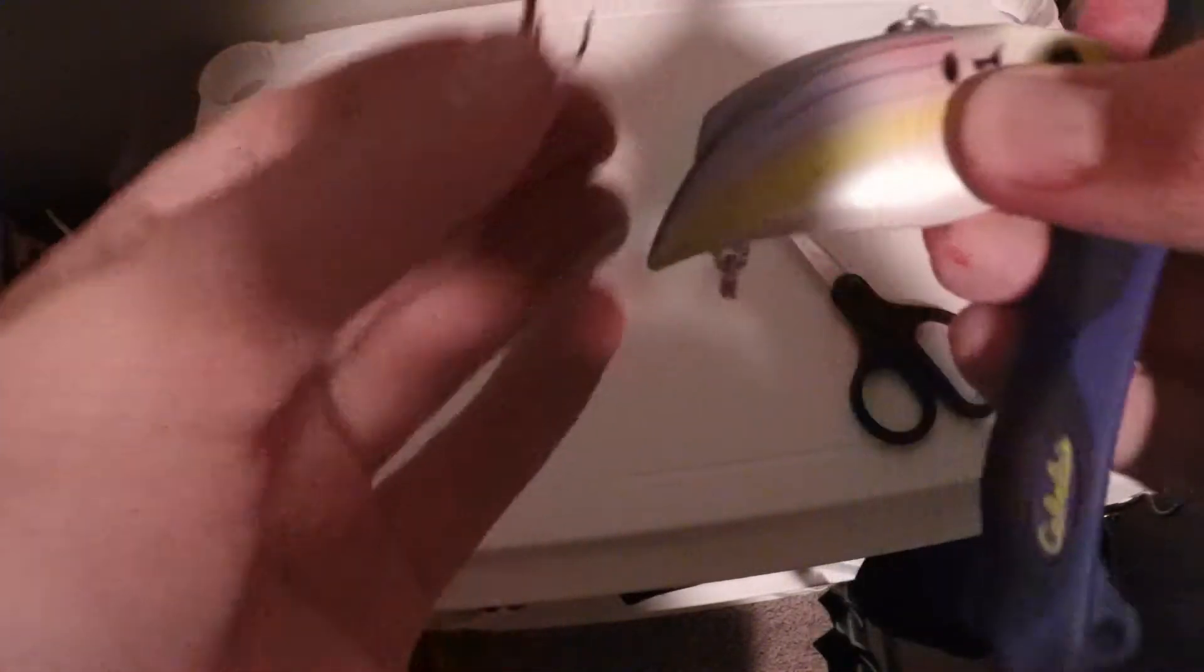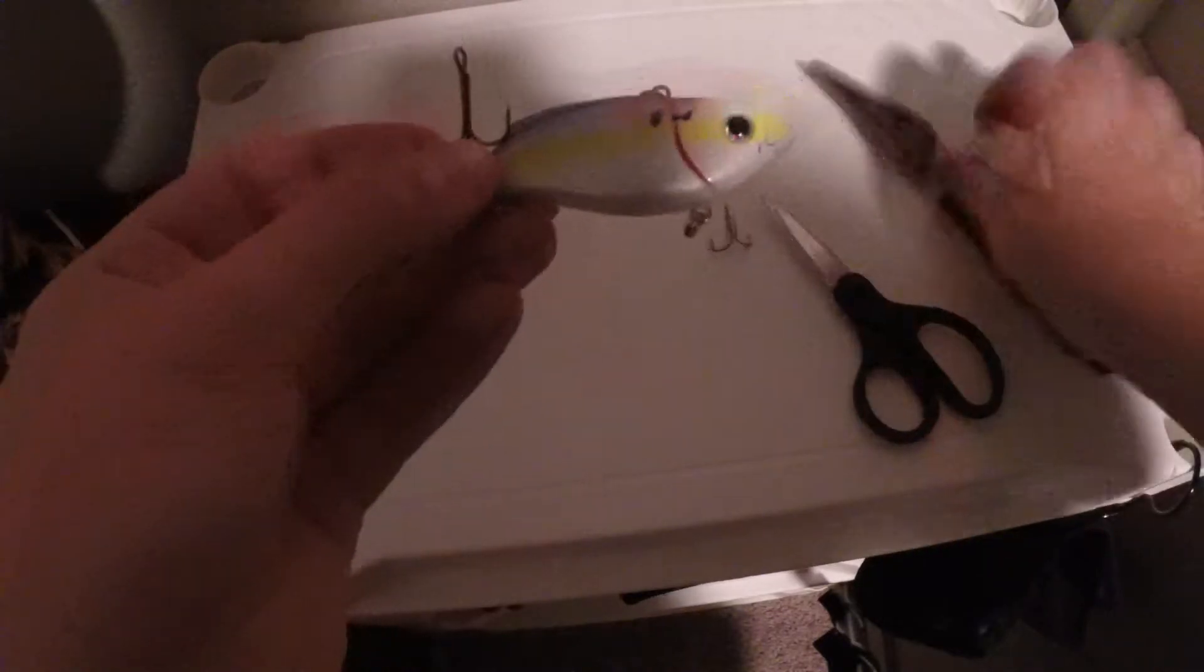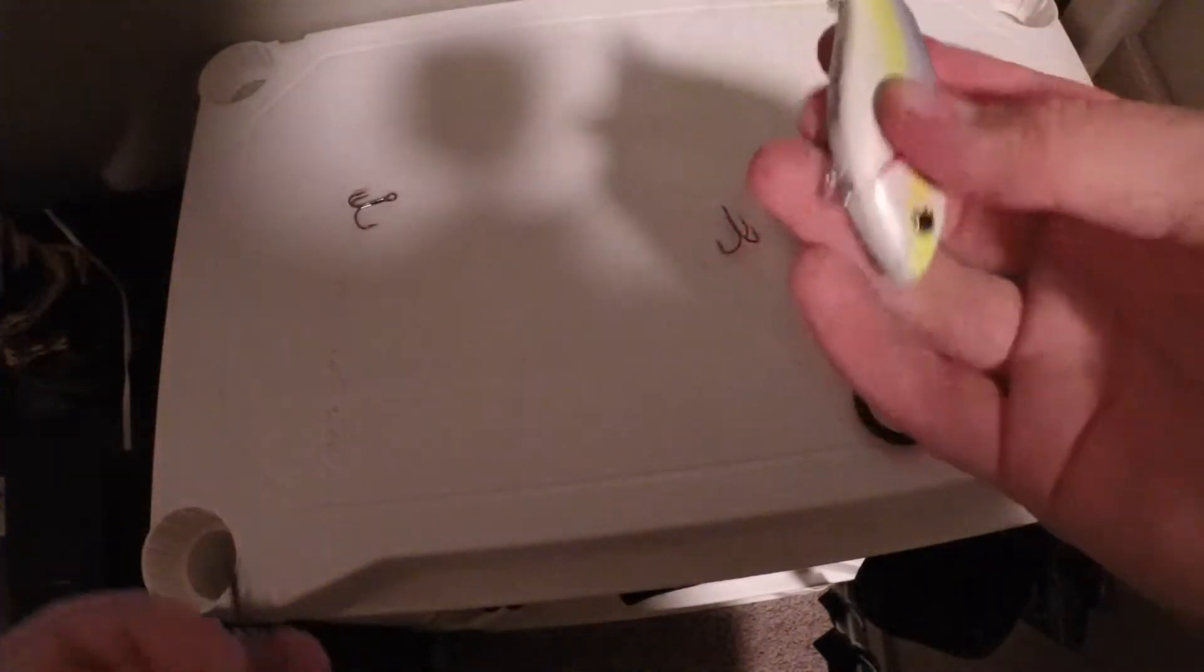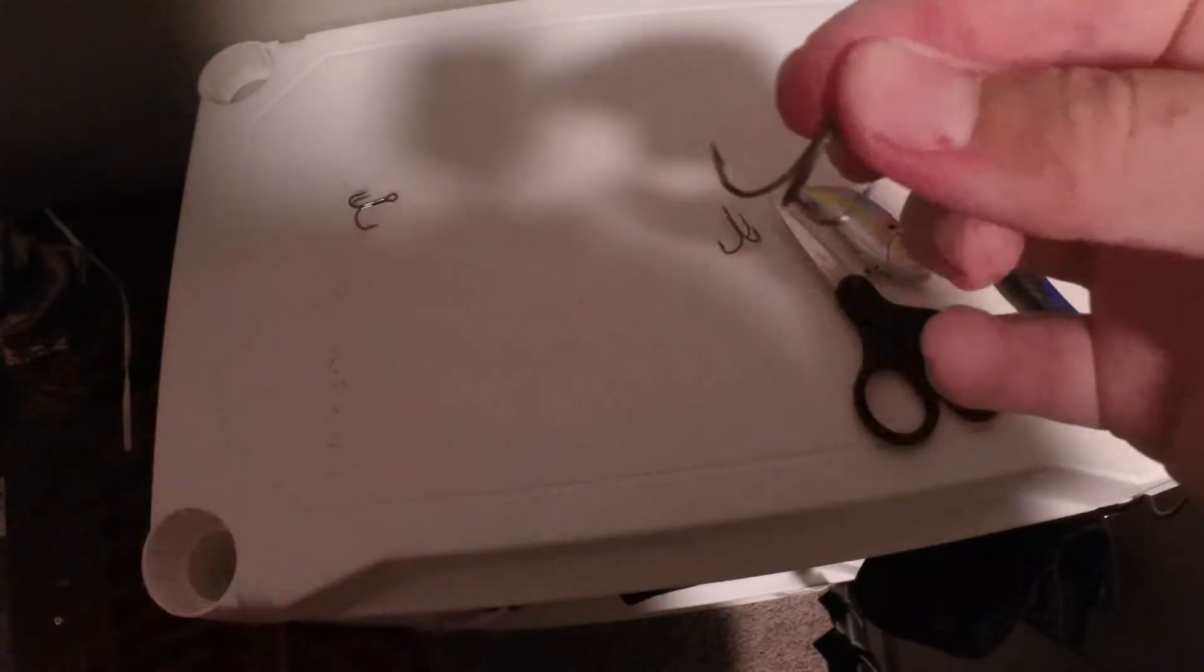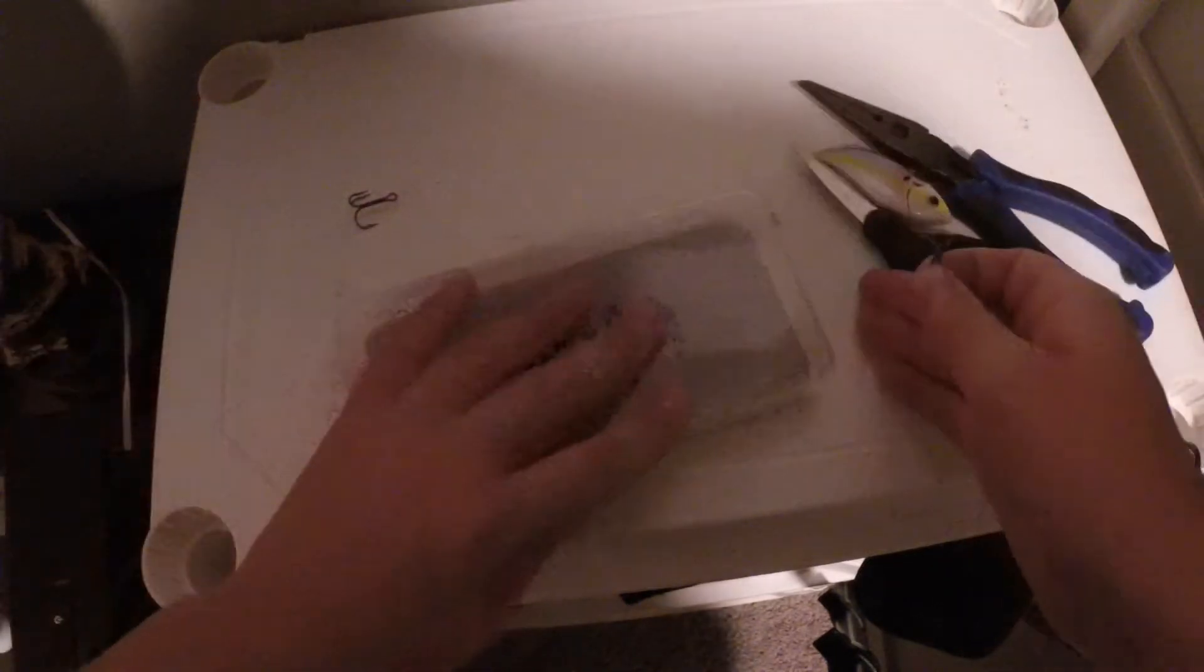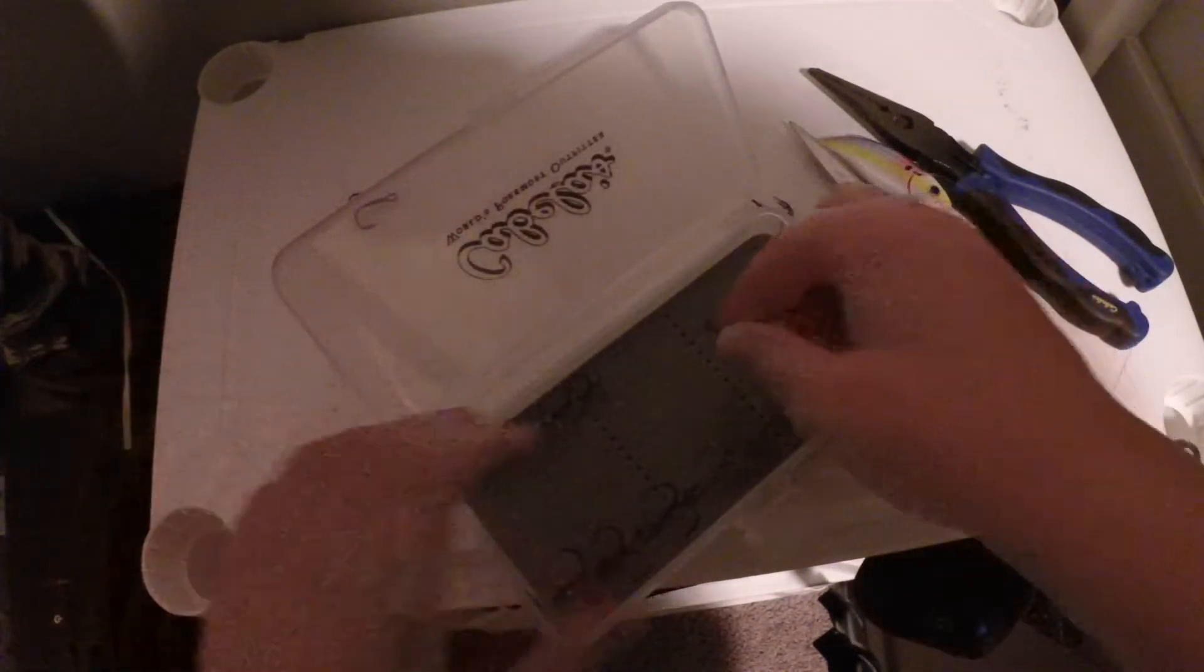Right there, so then the split ring is split. Just keep rotating this around and there it is. So then you have your bait right there with no hooks on it and you still have the split rings, and here's your hook right there. I'm going to just put that back in there.